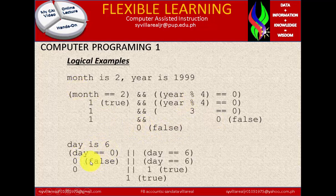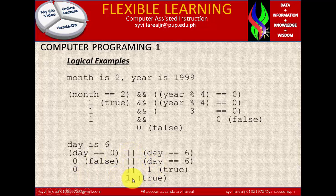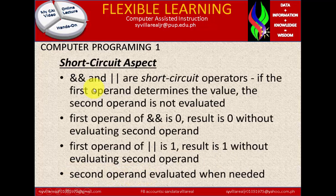Next, day is 6. So day exactly equals 0 is false, because 6 is not equal to 0. But day exactly equals 6 is true. So using OR: 0 OR 1, the answer is 1 or true.